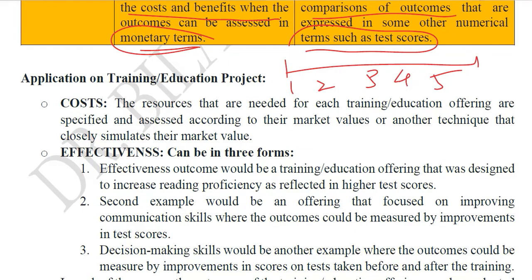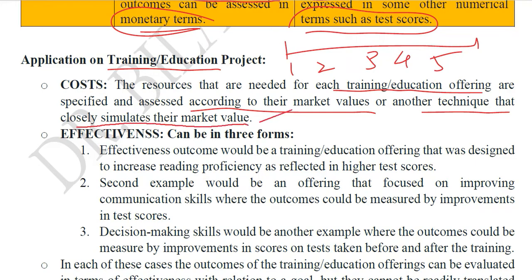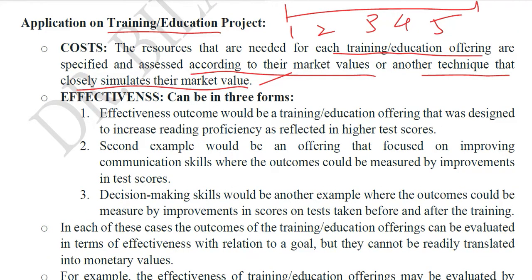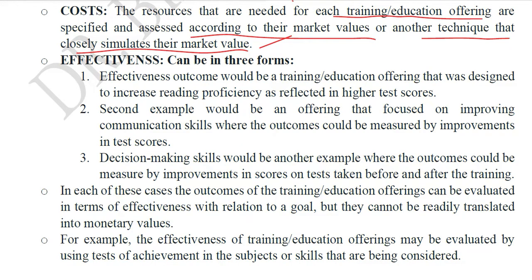We will now apply cost effectiveness analysis to a training or education project. The costs required for each training or education program are estimated the same way as before — according to their market values or any technique that closely simulates market value. Whether costs are directly available or estimated, this process is the same as what we have done for CBA.